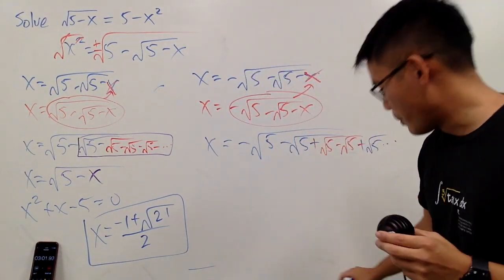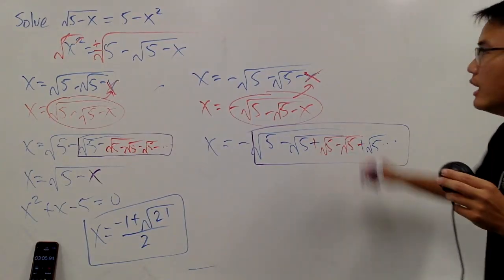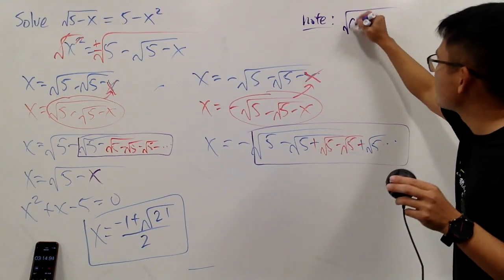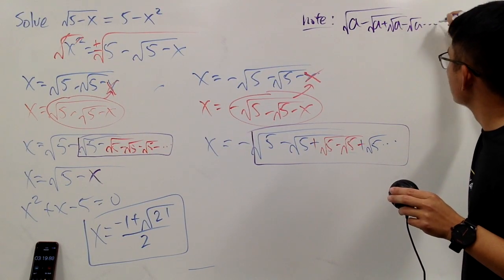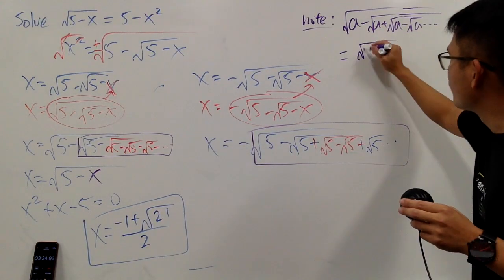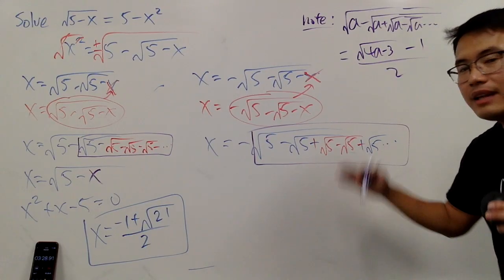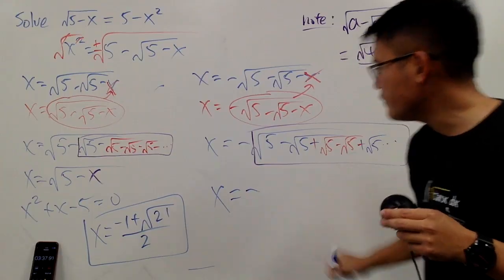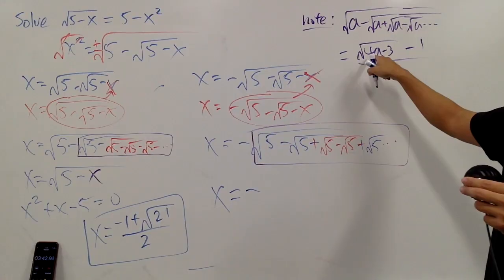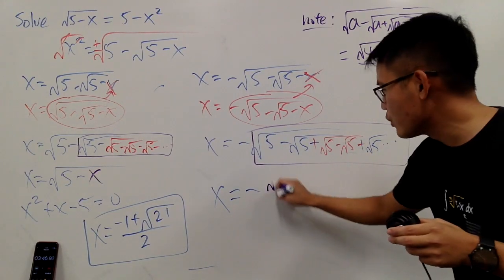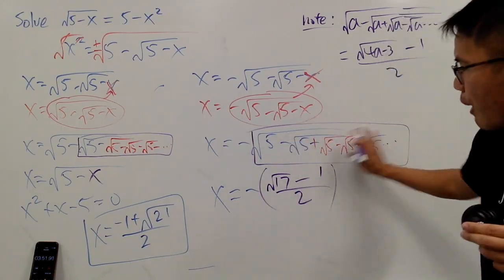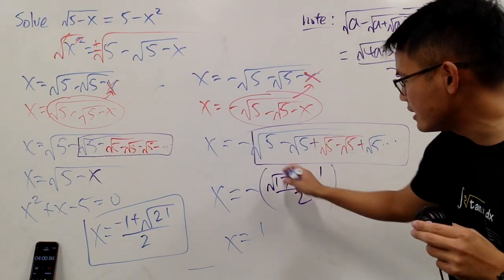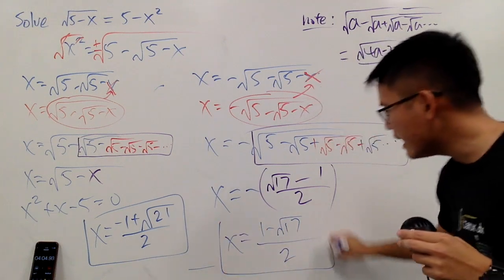So how do we handle this? Whenever you have an alternating infinite nested radical, suppose you have the square root of a minus the square root of a plus the square root of a minus... and so on. There's a really nice formula: the answer is the square root of 4a minus 3, minus 1, all over 2. Here a is just 5. So 4 times 5 is 20, minus 3 is 17, giving us the square root of 17 minus 1 all over 2. Then distributing the negative: negative 1 over 2 plus the square root of 17 gives us 1 minus the square root of 17, all over 2. And with that, we're done.